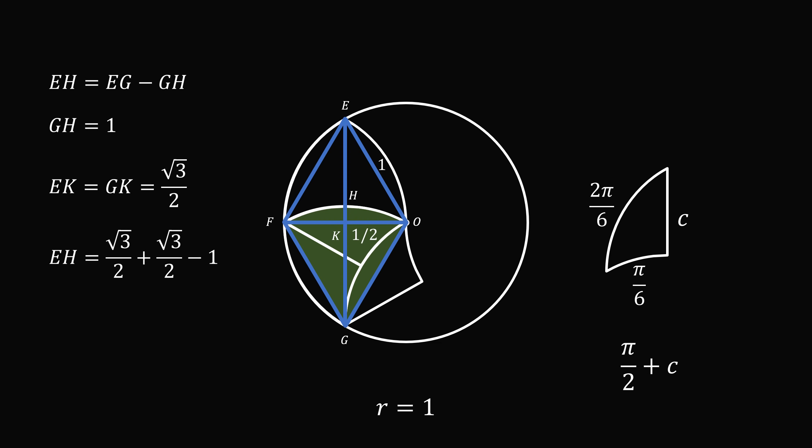So, we have that e, h is equal to square root of 3 over 2 plus square root of 3 over 2 minus 1, which is equal to the square root of 3 minus 1. Therefore, c is equal to the square root of 3 minus 1.